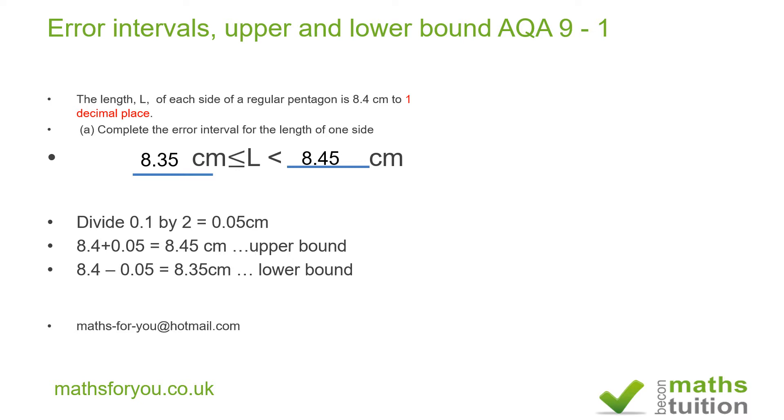Now, note here that the difference between 8.45 and 8.35 is 0.1. Okay, now that's the first section. Now, for the second section of B, it says complete the error interval for the perimeter.